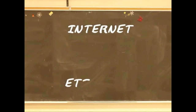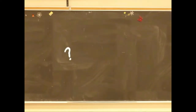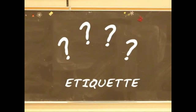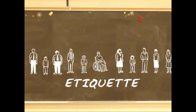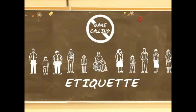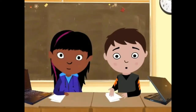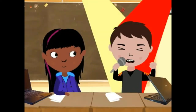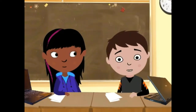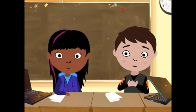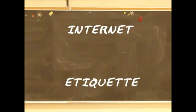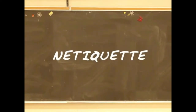Netiquette is made up of two words: internet and etiquette. Etiquette is a set of rules for everybody on how to behave properly — like not calling people names, being polite, saying please and thank you. Etiquette is basically treating people how you'd like to be treated, with respect.